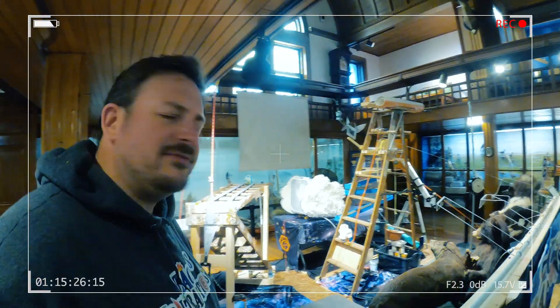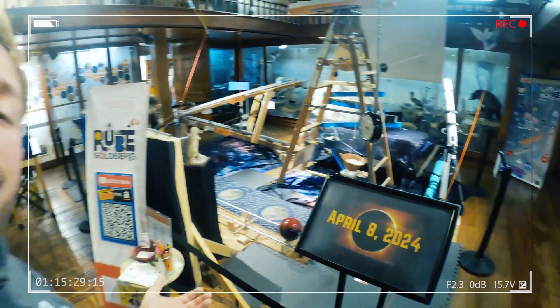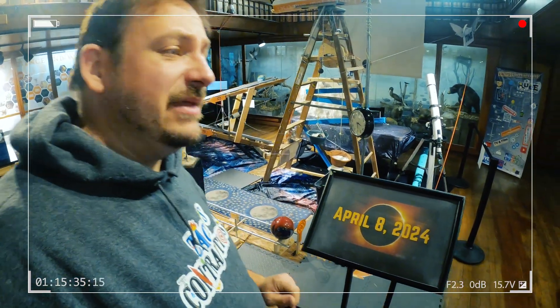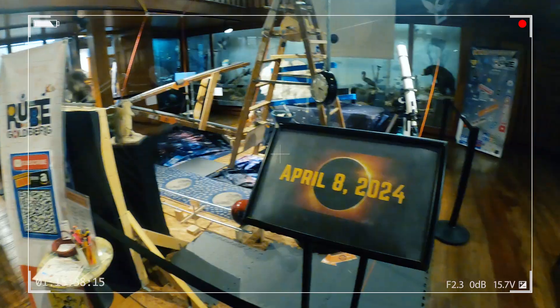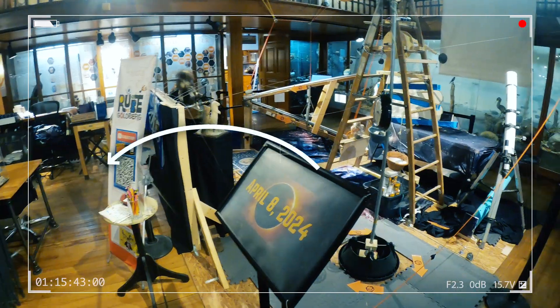My solar eclipse Rube Goldberg machine from Zack's Contraptions. Well, the eclipse happened on April 8th, 2024. As of now, it's only three weeks away from the event, but of course, as time passes on, we need to return to that date. We need to go back.